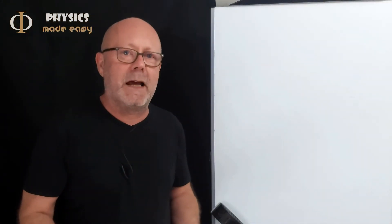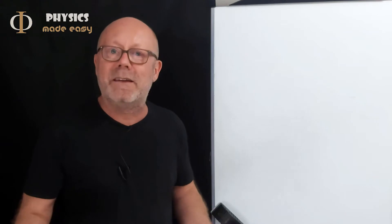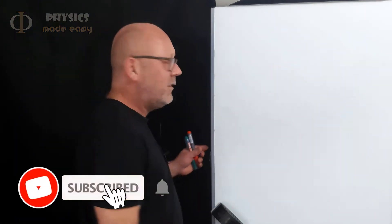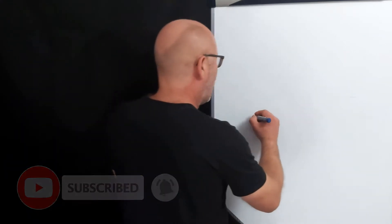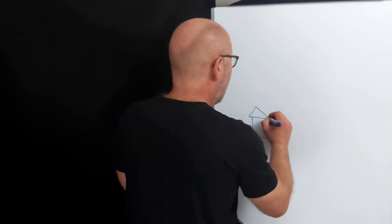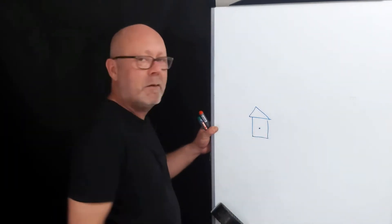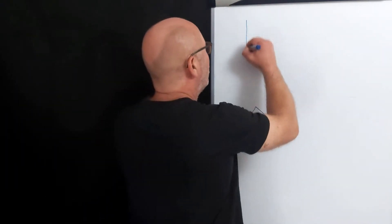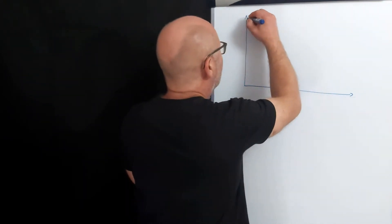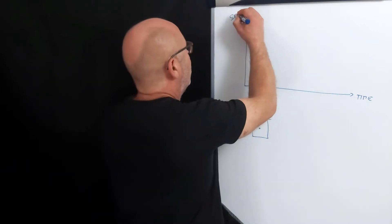A Feynman diagram is a space-time diagram, so it's a good idea to know what a space-time diagram is and know how to use it a little bit. Let's take a simple example. I'm going to draw the space-time diagram. Here I have time, and here I have space.